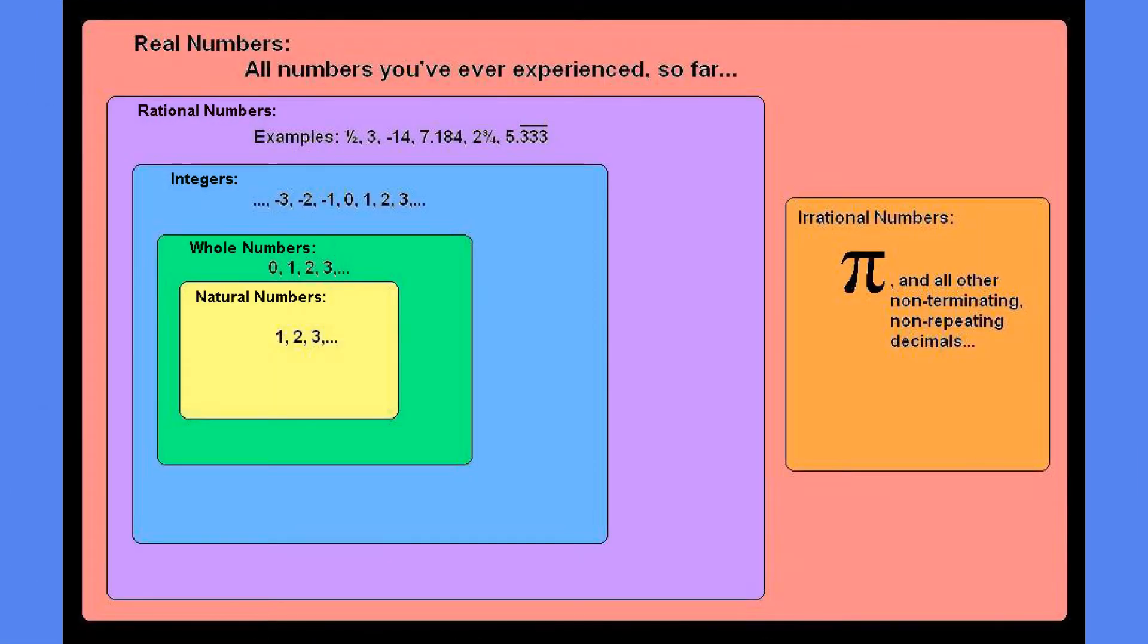So right here we have a Venn diagram that illustrates how the different subsets of real numbers are related to each other. So you can see real numbers consist of everything, and then there's just smaller subsets within the real numbers. One thing to note is that there are actually more irrational numbers than rationals. So the irrational area really should be the biggest area.